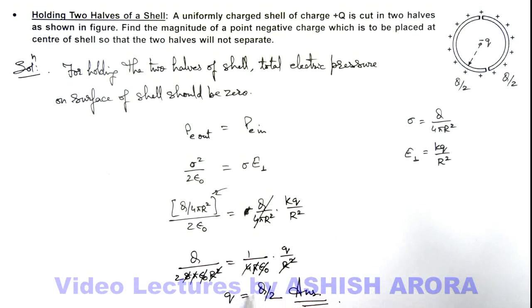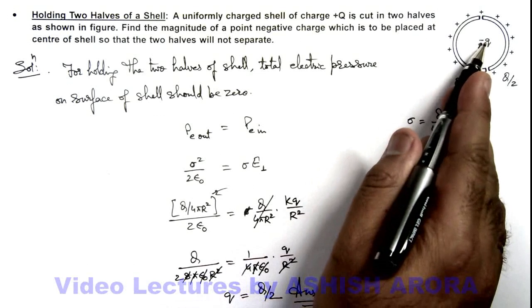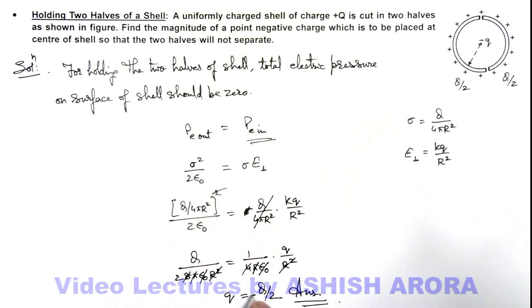And this is the magnitude, and we already discussed it should be negative for the pressure to be in inward direction, so we'll put a negative sign just to complete it, that the charge required is negative charge.